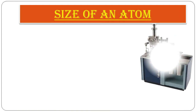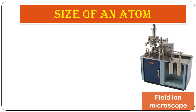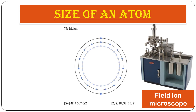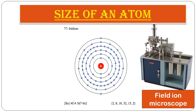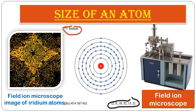Atoms are very tiny — they are the smallest and individually indivisible part of an element. Modern instruments like the electron microscope, field ion microscope, and scanning tunneling microscope can identify atoms. Here, a field ion microscope image of an iridium atom (atomic number 77) is shown, where every spot in the image represents one iridium atom.